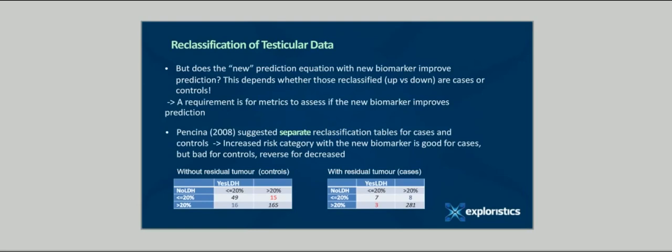For this reason, Michael Pencina in 2008 suggested separate reclassification tables for cases and controls. We present these for the testicular cancer data. So increased risk category reclassification with a new biomarker indicates better prediction with the new model for cases, but it's the reverse for controls. Lower predictions and reclassification down are better for these. In our testicular cancer data, using 20 percent as a clinically important cutoff between low and high risk, we see in the first table for the controls, those without tumour, that 15 in red went from low to high risk, a worse prediction, and 16 from high to low, a better prediction. We call that a net improvement of one. With cases, it works the other way. Eight improved or increased their predictions. And three worsened or decreased. A net improvement of five.